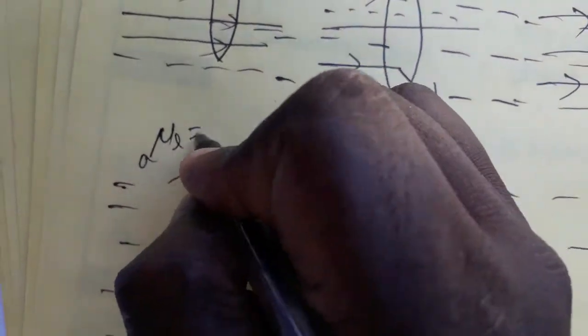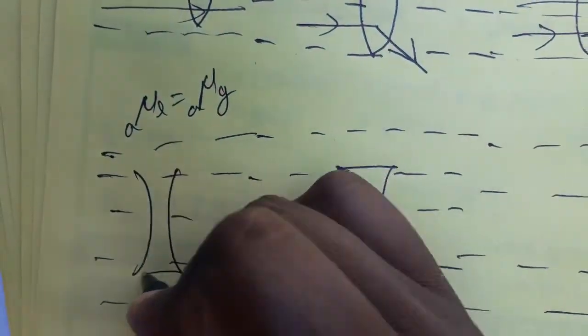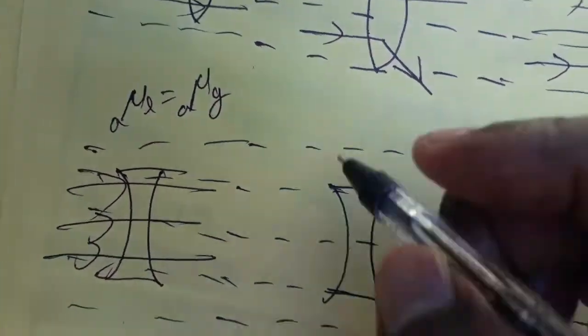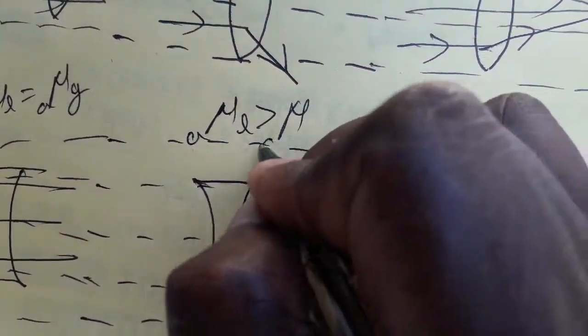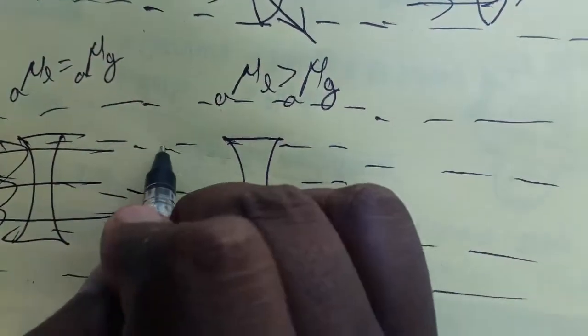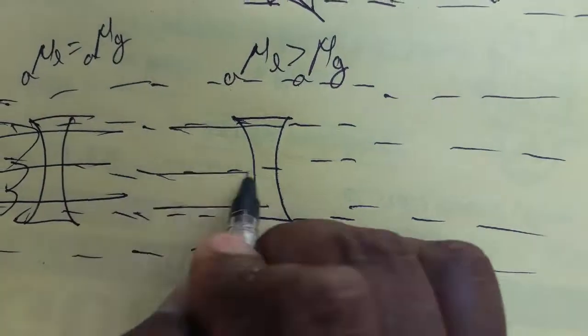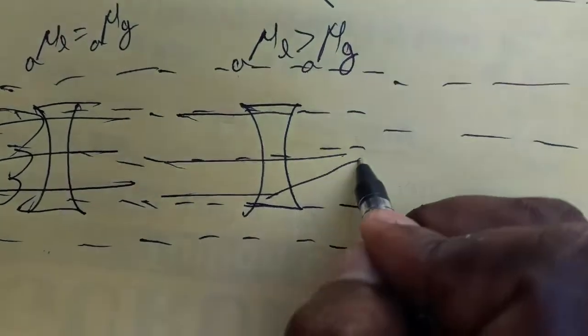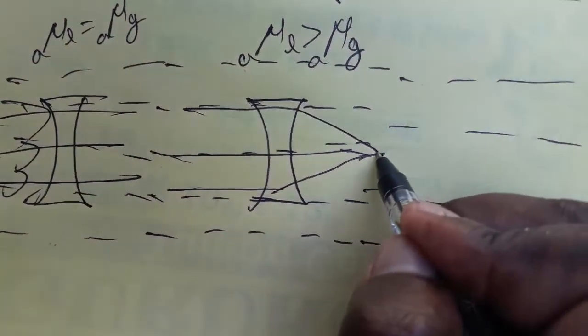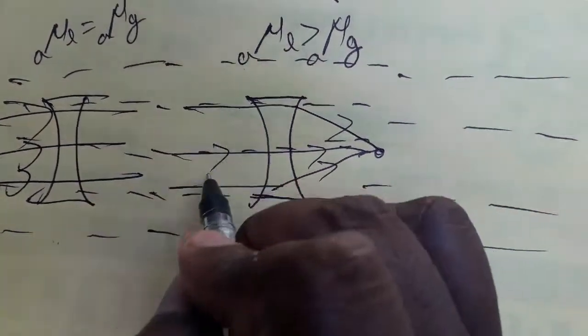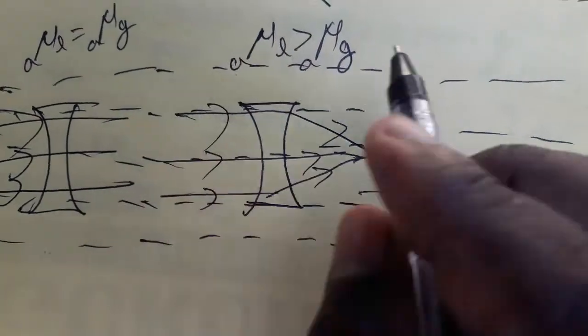Now for the concave lens: when the liquid refractive index is equal to the glass refractive index, the concave lens behaves like a transparent medium — light passes straight through. When the liquid refractive index is greater than the glass refractive index, the concave lens will converge light. Since it is already a divergent lens, the change in refractive index causes it to behave in the opposite way.